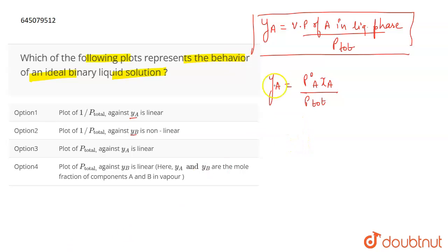So now, if we plot a curve between YA and P total, this equation will be like Y equals MX. So we are plotting between YA and 1 by P total.